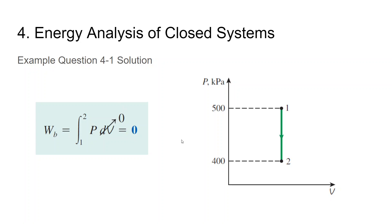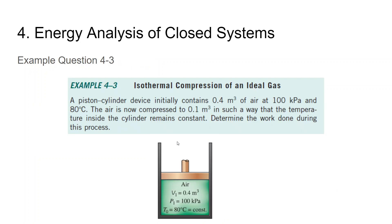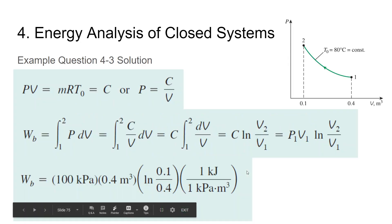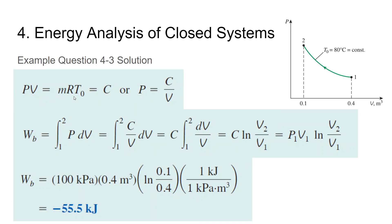Now Example 4-3: isothermal compression of an ideal gas. The gas is air, so we can use the ideal gas equation. The temperature inside the cylinder remains constant, so T equals a constant. The ideal gas equation is pV = mRT. Since temperature is constant and the system is closed (mass doesn't escape), then m, R, and T are all constant, which means pV is also constant.